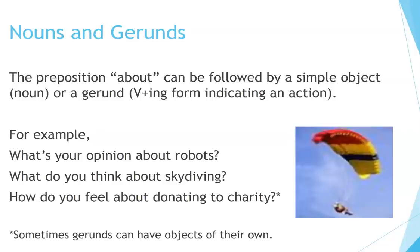Nouns and gerunds. The preposition 'about' can be followed by a simple object — a noun — or a gerund (verb + -ing), indicating an action. For example: What's your opinion about robots? What do you think about skydiving? How do you feel about donating to charity?